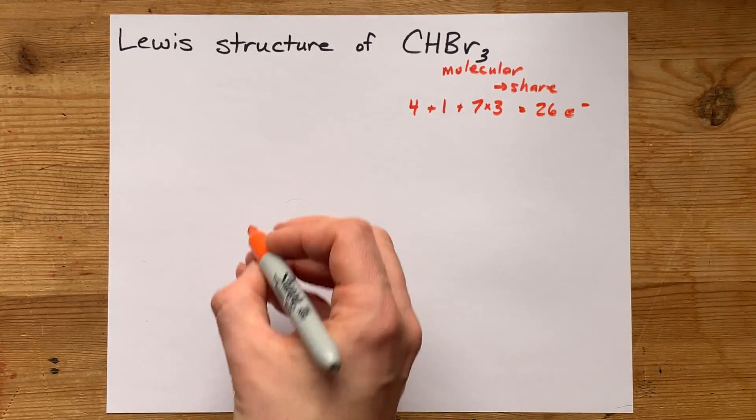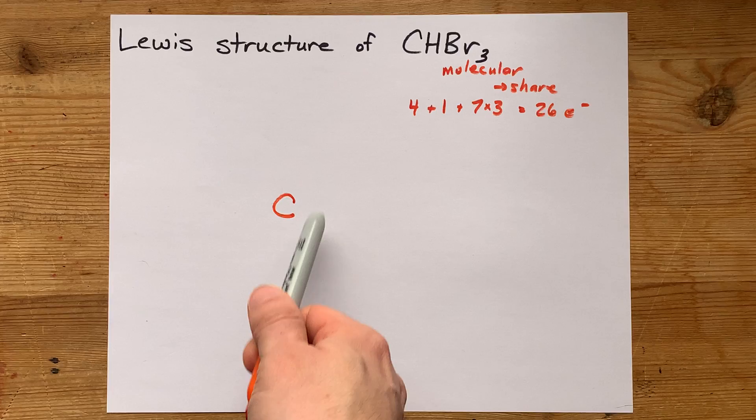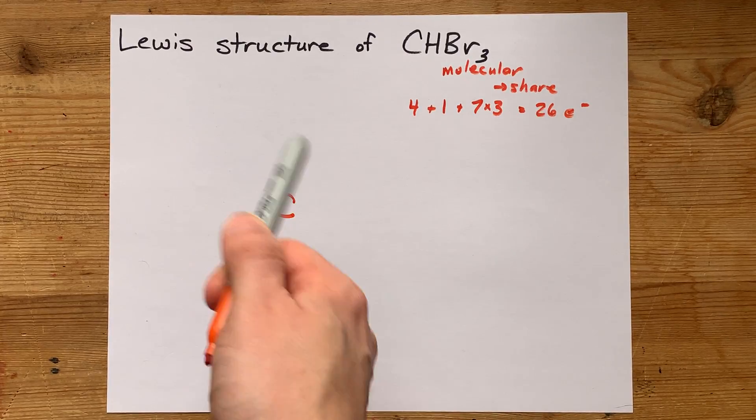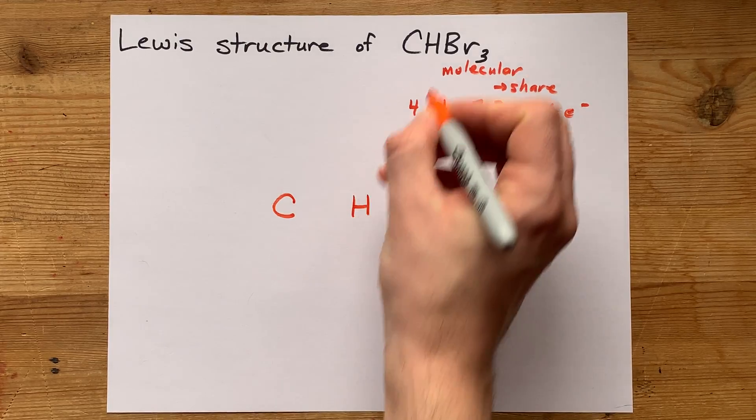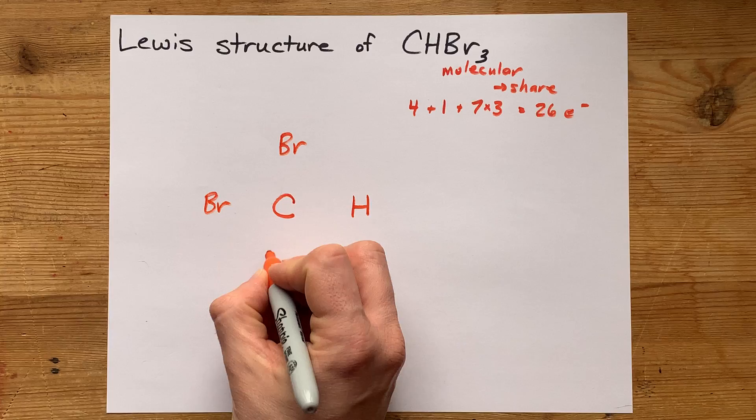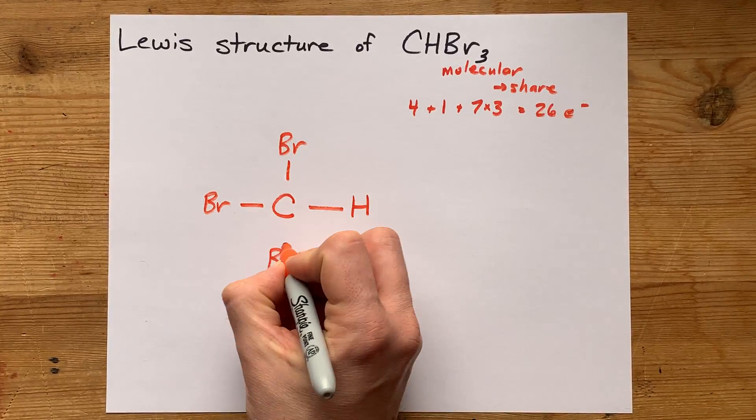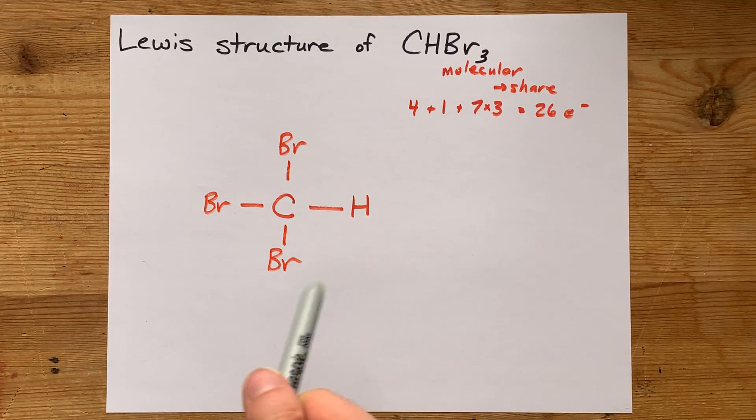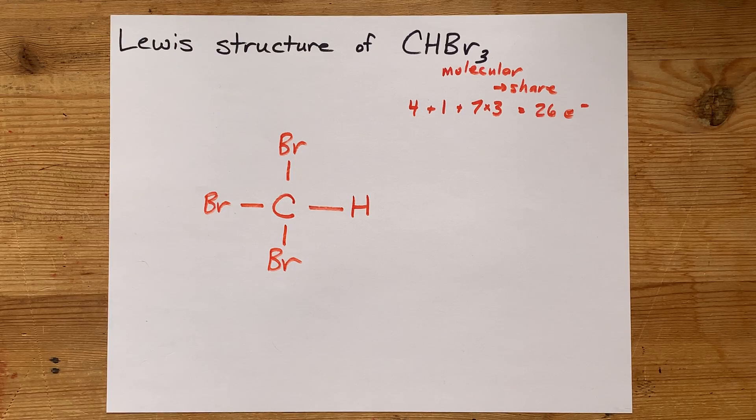I'm going to put the central atom in the center. Carbon can make up to four bonds, so I always put the atom that can form the most bonds in the center. It's a rule of thumb. Then I surround it with a hydrogen and three bromines: one, two, three. I'm going to single bond the carbon to each of those, because if they weren't held together, it wouldn't be a molecule. That's two, four, six, eight electrons already dealt with.